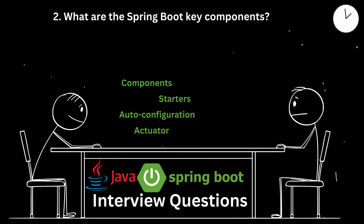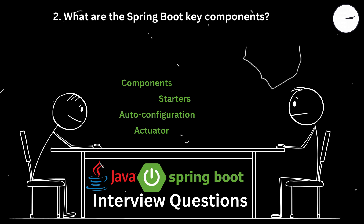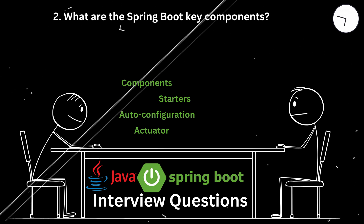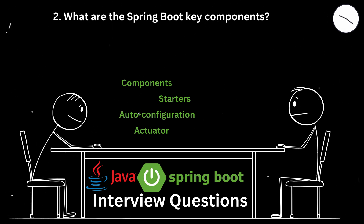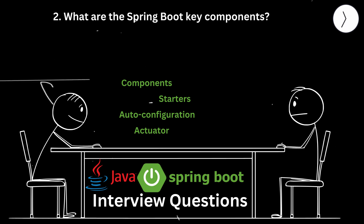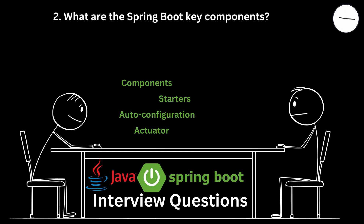Spring Boot Auto Configuration automatically configures Spring applications based on the included JAR dependencies. Including Spring Boot Starter Web in a project for a customer service portal automatically set up the necessary web server configurations.